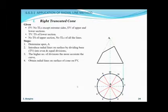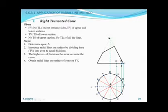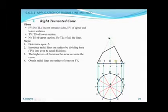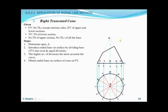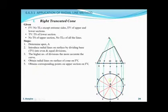Note that the visible points on the front view are one through seven. Points eight, nine, ten, eleven, and twelve are invisible. For the radial lines, join all lines to the apex, giving us our radial lines on the front view.